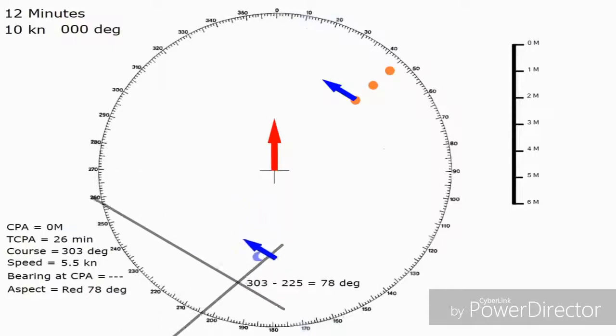Now after all that we've completed the plot. Completing the plot simply means finding the closest point of approach, time to the closest point of approach, target vessel's course and speed, their bearing when they're at the closest point of approach and their aspect. In other diagrams it would be more difficult to find these and we might have a CPA that's not quite zero.